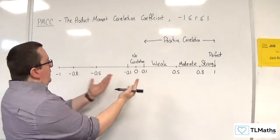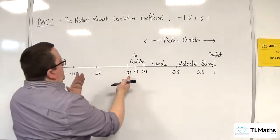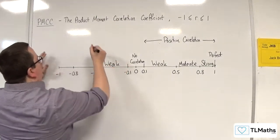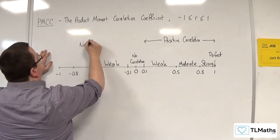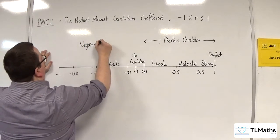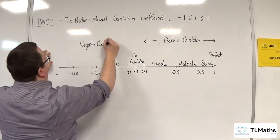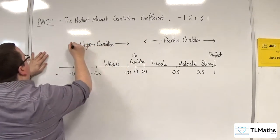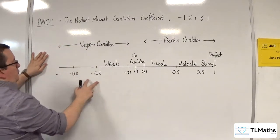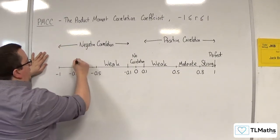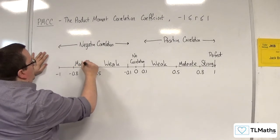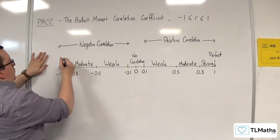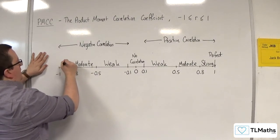And likewise, in the negative direction, if it's between minus 0.1 and minus 0.5, then that is weak negative correlation. If it's between minus 0.5 and minus 0.8, that's moderately strong negative correlation. If it's between minus 1 and minus 0.8, then that's strong negative correlation.